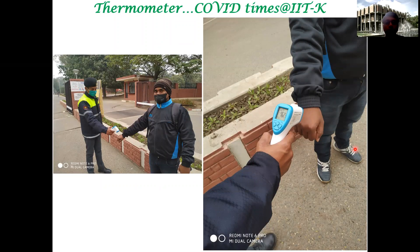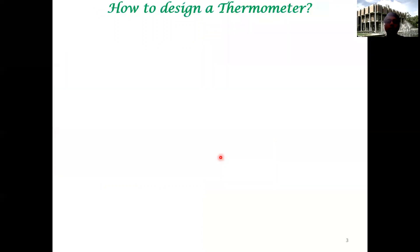In the campus these are COVID times, the thermometer you would be using is something like this. We will look at this at a later point, but let's first understand how we got here - not in terms of COVID but in terms of thermometer. Is there a reasonable, systematic approach to designing a thermometer?